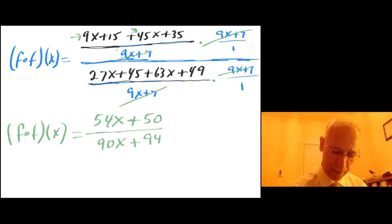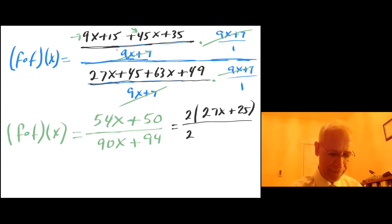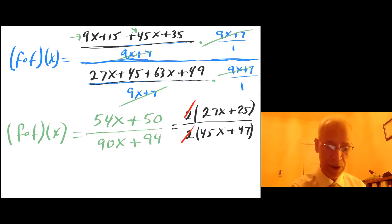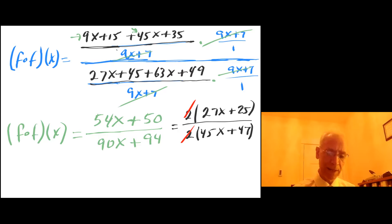Factoring 2 out from numerator and denominator: on top I have 2 times (27x plus 25), and on the denominator I have 2 times (45x plus 47). Now that I have a product, I can cancel the 2 with the 2. So my final answer is 27x plus 25 over 45x plus 47.